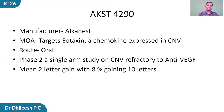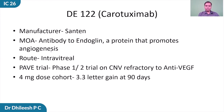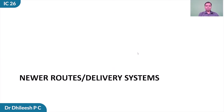AKST4290 by Alkahest is another molecule targeting the chemokine eotaxin. In the phase 2 study on CNV refractory to anti-VEGF, this drug could cause a gain of around 2 letters in the mean, and about 8% of patients gained 10 letters or more. This is an oral drug. Carotuximab by Santen Pharmaceuticals Japan is an antibody against endoglin targeting refractory CNVM; in a 4-mg dose cohort, there was around 3.3 letters gain at 90 days.